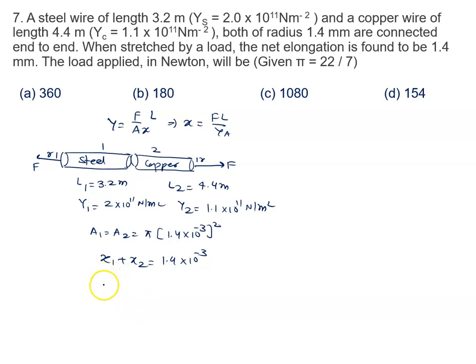So what we can say, F1 is F. Both the forces are same. FL1 upon Y1. A1 is A. We can say both are having the same area of cross section A. Plus F is same. L2, Y2 into A is given by 1.4 into 10 raised to power minus 3.